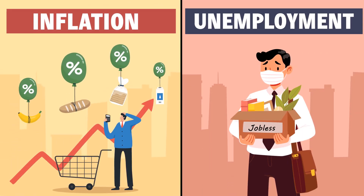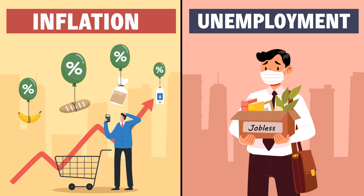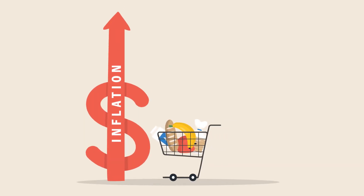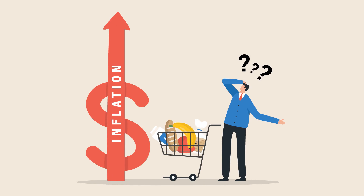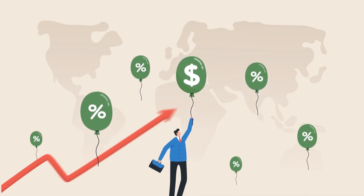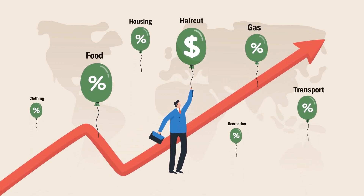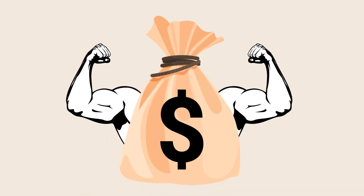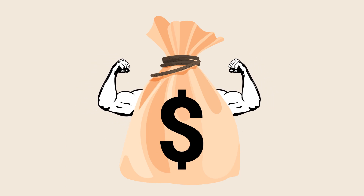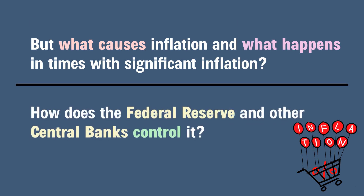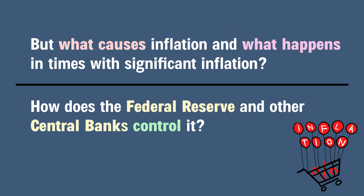Inflation and unemployment are the two most talked about words in contemporary society — the big problems that plague all economies. Almost everyone knows what inflation is, but it remains a source of great confusion because it's difficult to define unambiguously. Inflation is a general increase in the prices of goods and services across the board, driving up prices for everything from a haircut to a gallon of gas. The purchasing power of every dollar in your pocket declines.